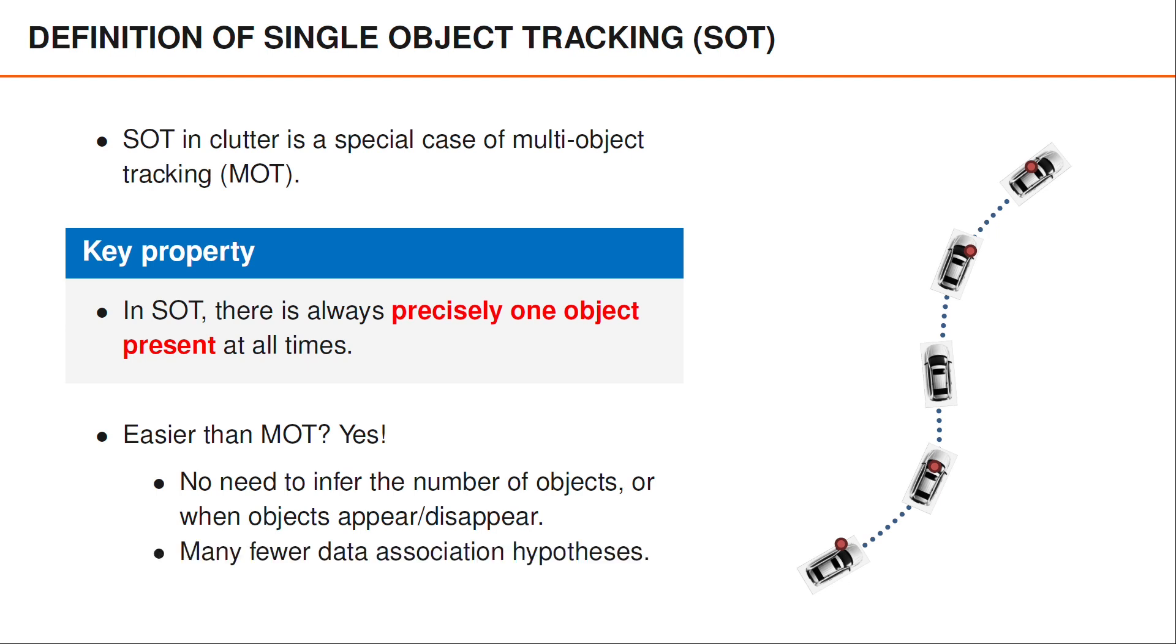A second reason is that we obtain many fewer data association hypotheses if there is only one object present. And this is important since it reduces the computational complexity of our filters. If you don't really know what a data association hypothesis is, don't worry about it. We'll learn more about this shortly.